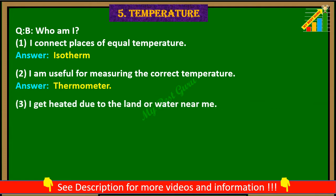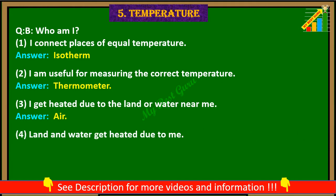3. I get heated due to the land or water near me. Answer: Air. 4. Land and water get heated due to me. Answer: Sun.